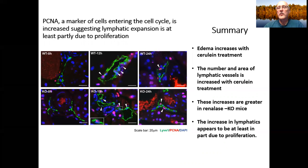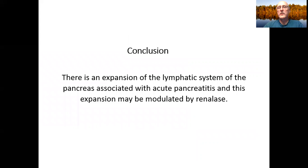So in summary, edema increases with cerulein treatment. The number and area of lymphatic vessels also increases with cerulein treatment. These increases are greater in renalase knockout mice, and the increase in lymphatics appears to be at least in part due to proliferation. So in conclusion, there is an expansion of the lymphatic system of the pancreas associated with acute pancreatitis, and this expansion may be modulated by renalase. I thank you for your time.